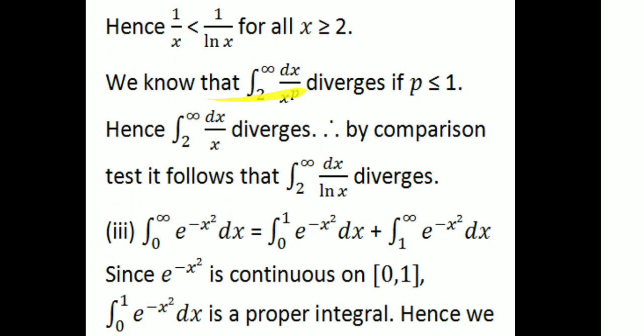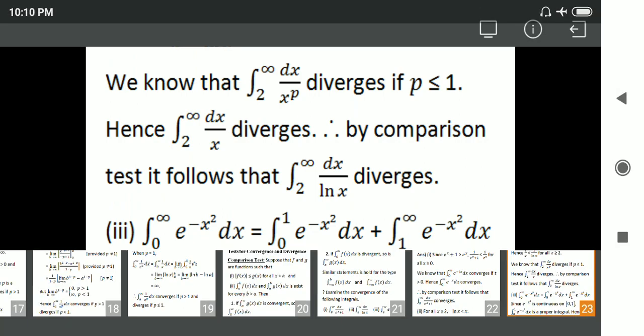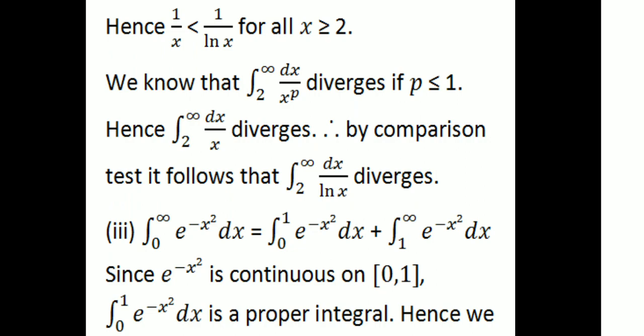We know that integral from 0 to infinity of dx/xᵖ diverges if p ≤ 1. For example, integral from 2 to infinity of dx/xᵖ diverges if p ≤ 1. Since 1/x ≤ 1/ln(x) for x ≥ 2, and integral from 2 to infinity of dx/x diverges, by comparison test it follows that integral from 2 to infinity of dx/ln(x) diverges.